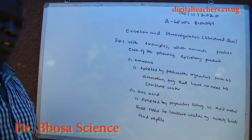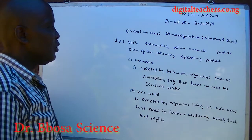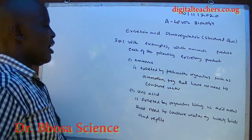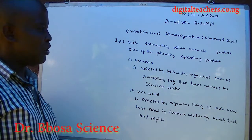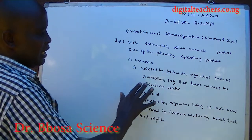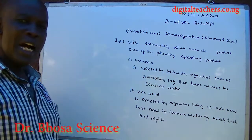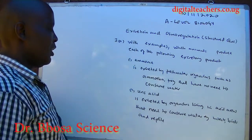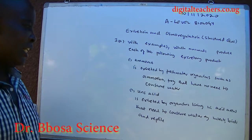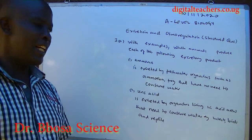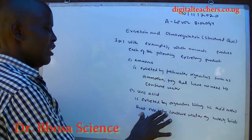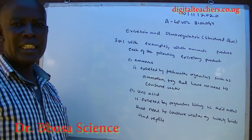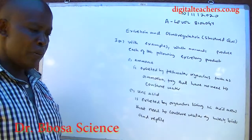With examples, which animals produce each of the following excretory products? Ammonia is excreted by freshwater organisms such as amoeba and Hydra, that have no need to conserve water. Uric acid is excreted by, for example, insects, birds and reptiles.